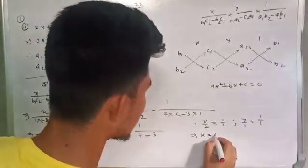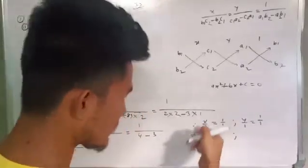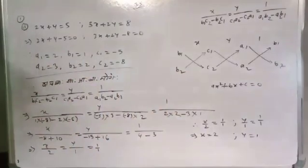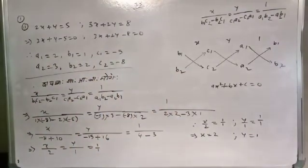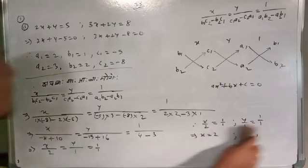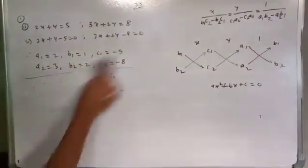So x equals 2 and y equals 1. Therefore x minus y equals 2 minus 1 equals 1. This is the exact solution. The third problem is straightforward — we simply check the path of the method.